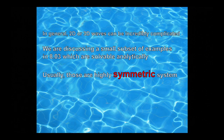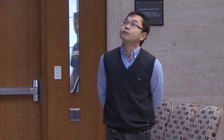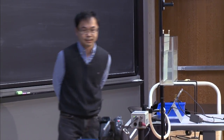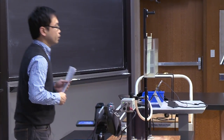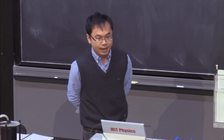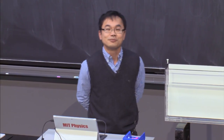In general, higher-order dimensions are hopeless — they are super complicated, and we don't really know how to solve such systems. Fortunately, in 8.03 we focus on a small subset of questions that are highly symmetric, so we can solve them analytically and learn some physics intuition. The system we are going to focus on today is a two-dimensional array of masses placed in the x and y plane.